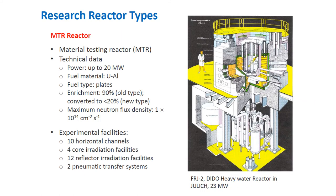The MTR, or material testing reactor, has technical data as follows: power up to 20 MW, fuel type is uranium-aluminum plates. It contains 10 or more in-core channels, four ex-core irradiation facilities, twelve reflector irradiation facilities, and two pneumatic transfer systems.